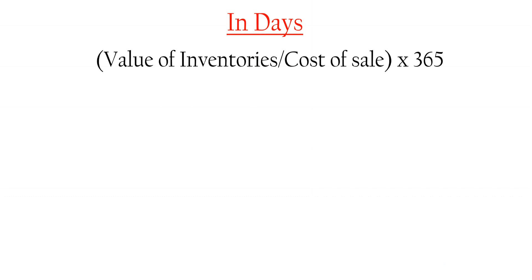The second calculation is in days, and there's a slight change in the formula. This time it's the average value of the stock divided by the cost of sales — the reverse — and then you multiply by 365, as those are the days in a year. What you want here is the opposite to times: a lower number of days suggests you are much more efficient, turning over stock faster and restocking more frequently.